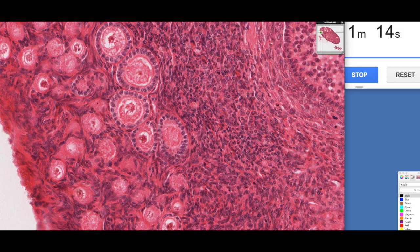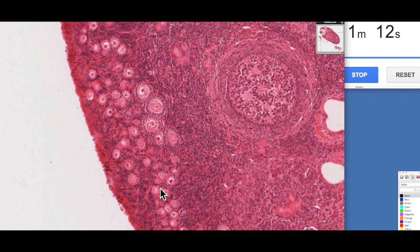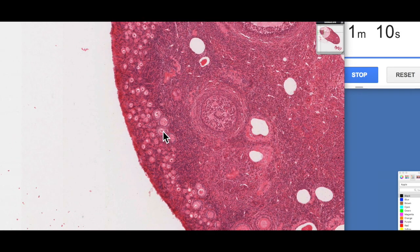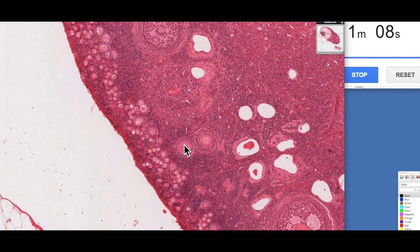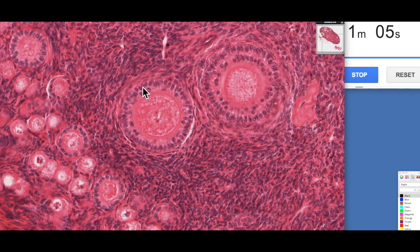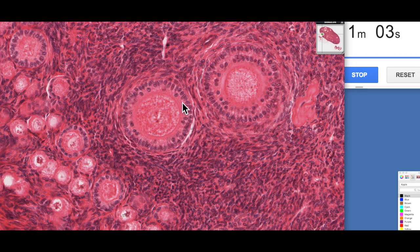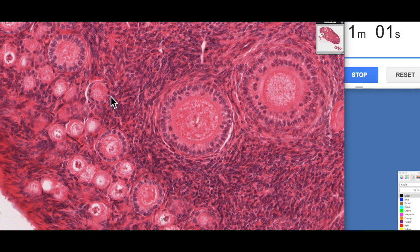And then those granulosa cells continue to divide. Eventually we'll move from this single layer of granulosa cells to one which has a double layer or more. So you can see an example of that here. This one here is known as a unilamina primary follicle. This one is known as a multilamina primary follicle. Unilamina means one layer of granulosa cells. Multilamina means multiple layers. You can see how big the oocyte's gotten here.